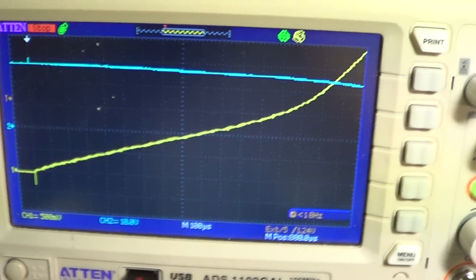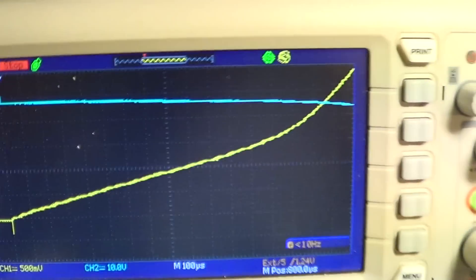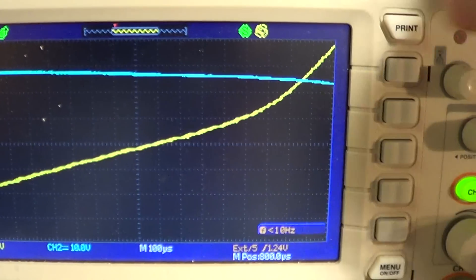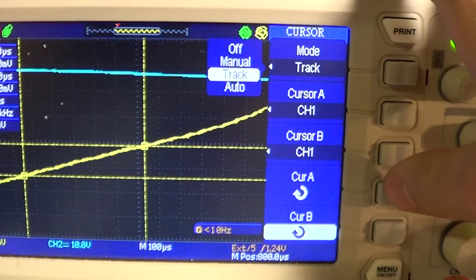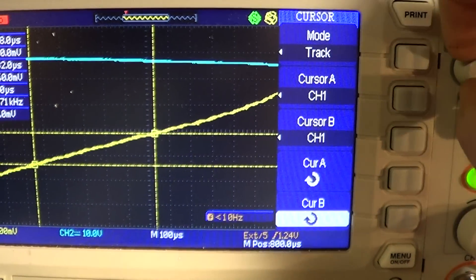Turn the thing off. So let's look at some figures. We'll turn our cursors on to track. Cursor A and cursor B.